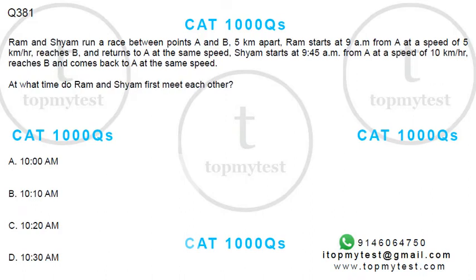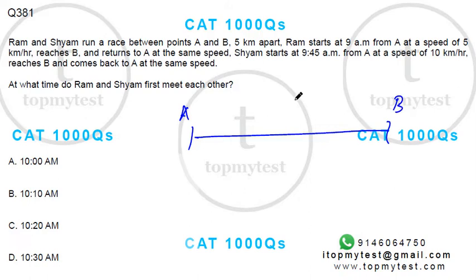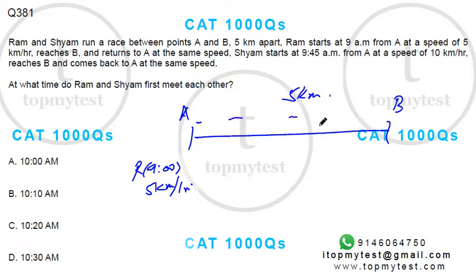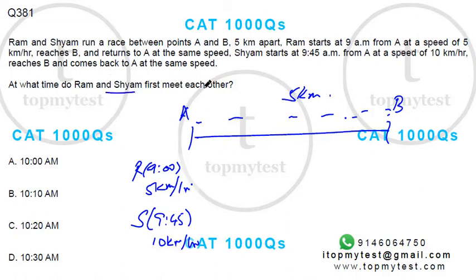This is a double question on time and distance that came up in CAT previously. Ram and Shyam run a race between point A and point B, five kilometers apart. Ram runs at 9 a.m. at a speed of five kilometers per hour, goes to B and returns to A at the same speed. Shyam starts at 9:45 at ten kilometers per hour and comes back to A at the same speed. The questions are: what time do Ram and Shyam first meet, and what time does Shyam overtake Ram?